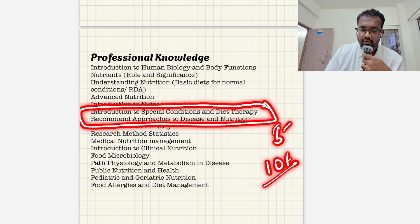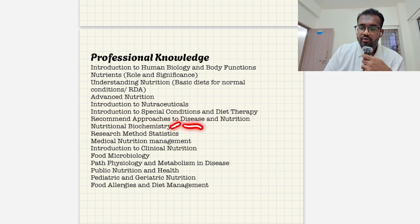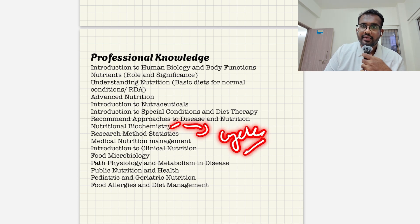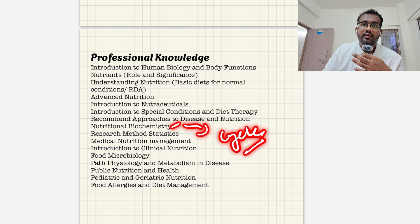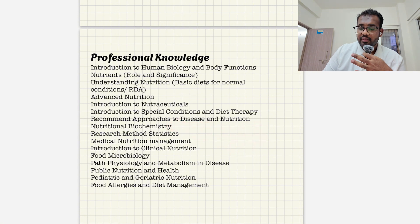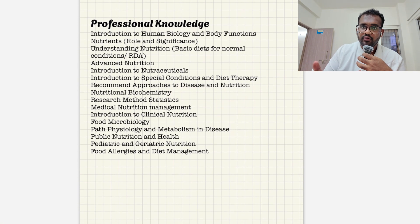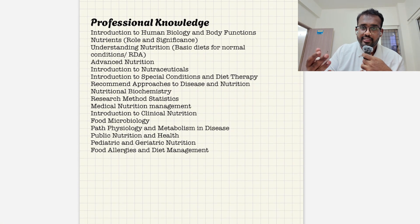Then comes nutritional biochemistry. Here you need to remember the metabolic cycles — glycolysis, gluconeogenesis, Krebs cycle — and their rate-limiting steps. This is very important; they will ask you what the rate-limiting step of glycolysis is. I have already mentioned all of this in detail in my notes, which you can check out.